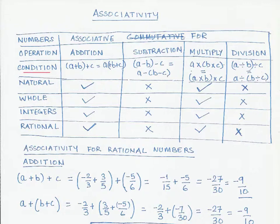For addition, we want to add three numbers: a plus b plus c. We could do it in two ways — first add a plus b and then add that result to c, or add b and c first and then add that result to a. This is what we mean by associativity: if we group numbers in different ways, does a particular operation give us the same result or not?